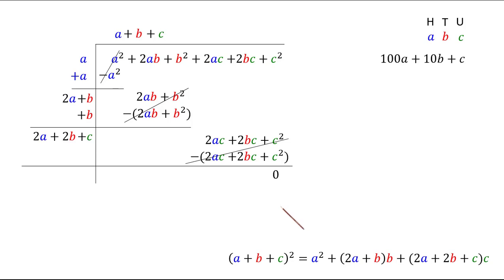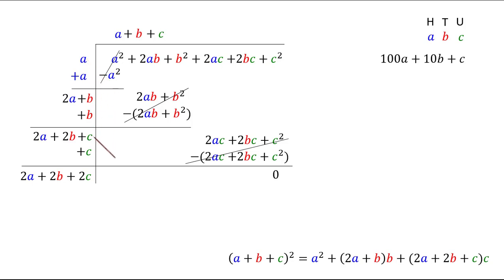If it is not a perfect square we need to continue further. Finally, we add C to get 2A + 2B + 2C, which is exactly double of A + B + C — double the square root. Remember: A is in the hundreds place, B in the tens place, and C in the units place. If you understood, please share this video with your friends and teachers, like the video, and subscribe to the channel.